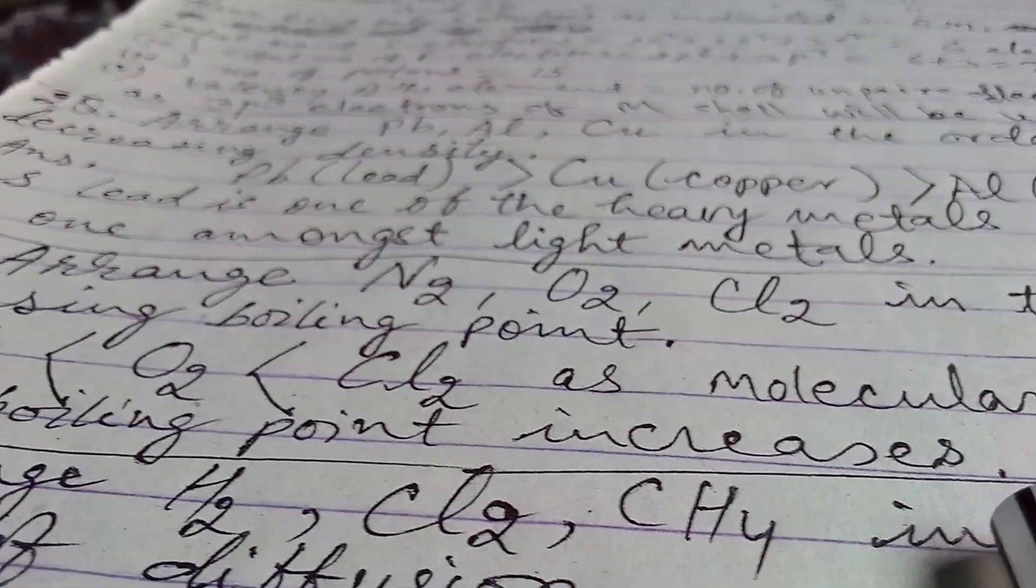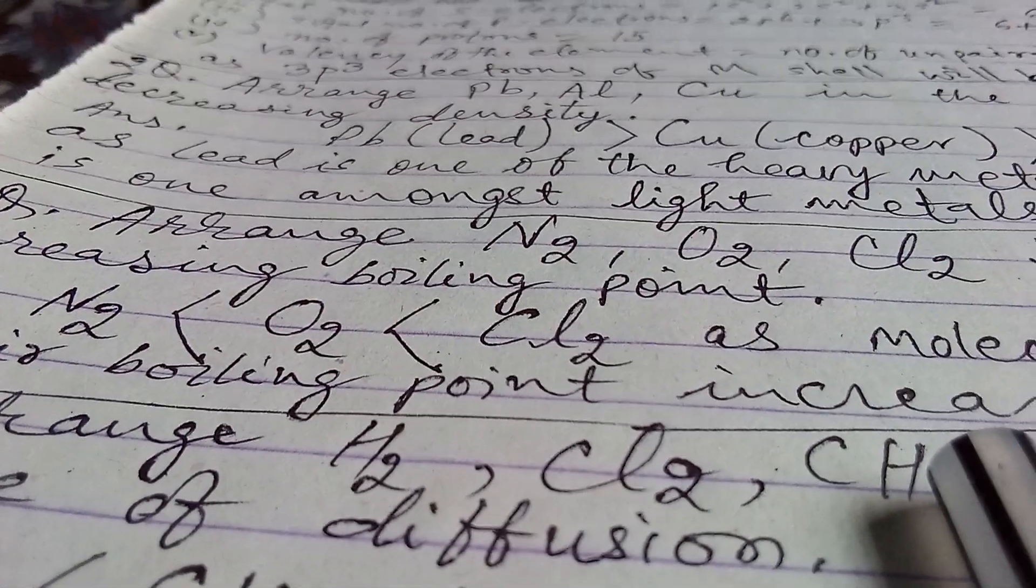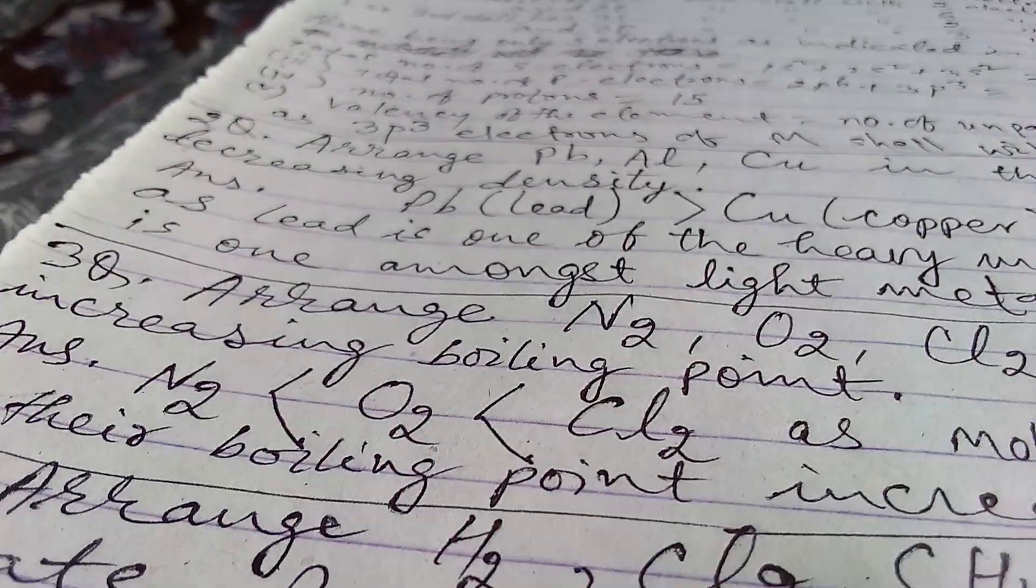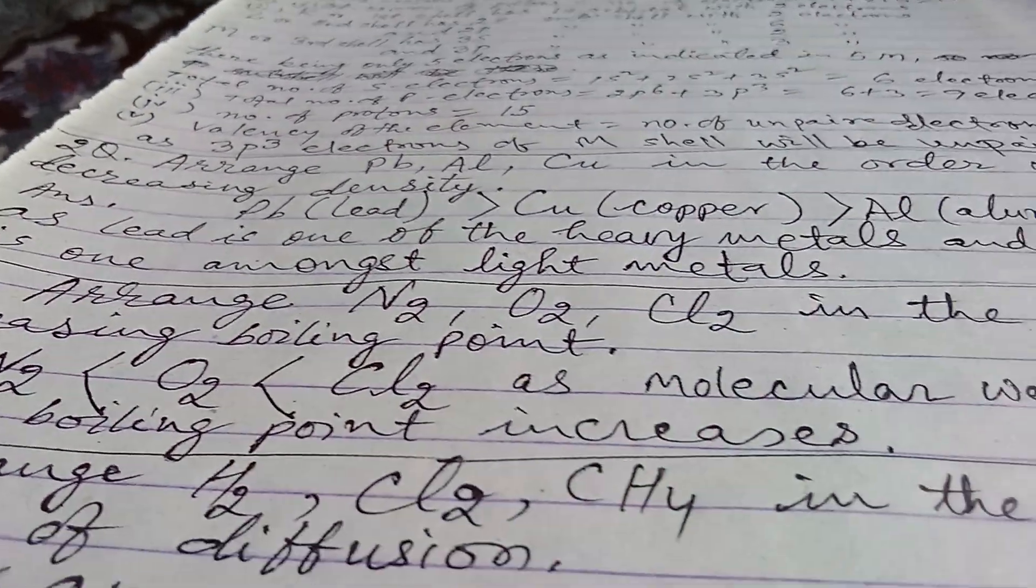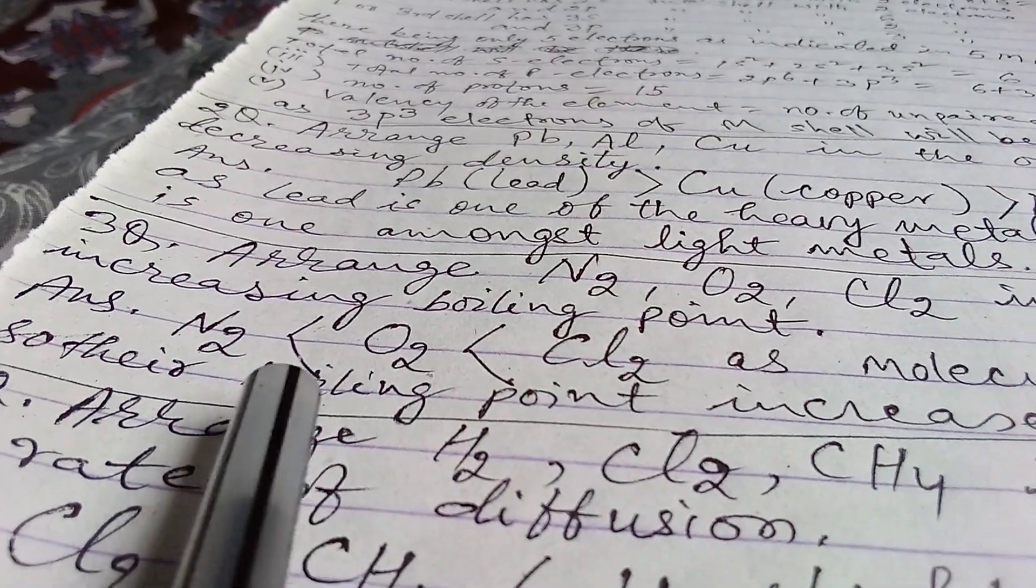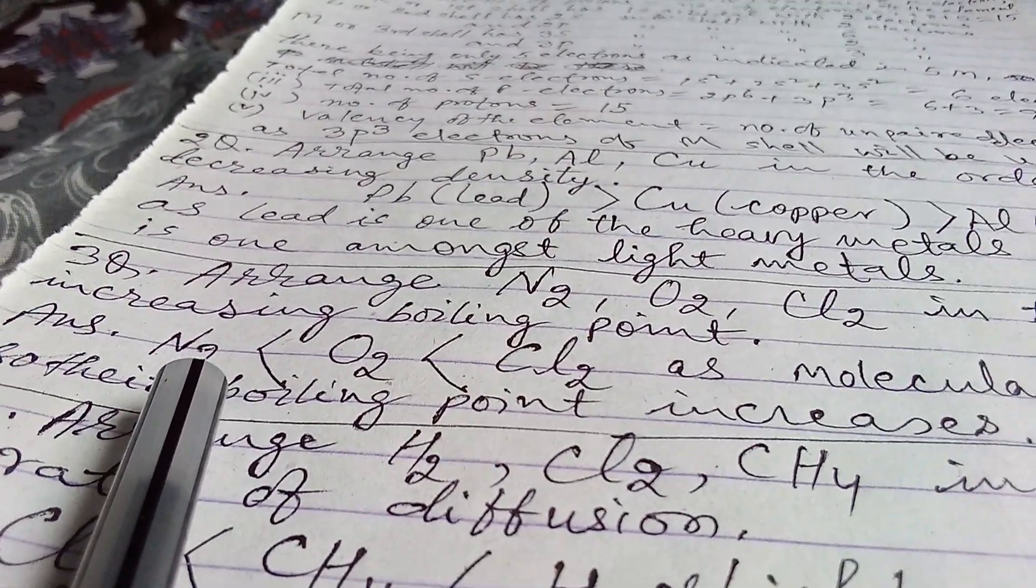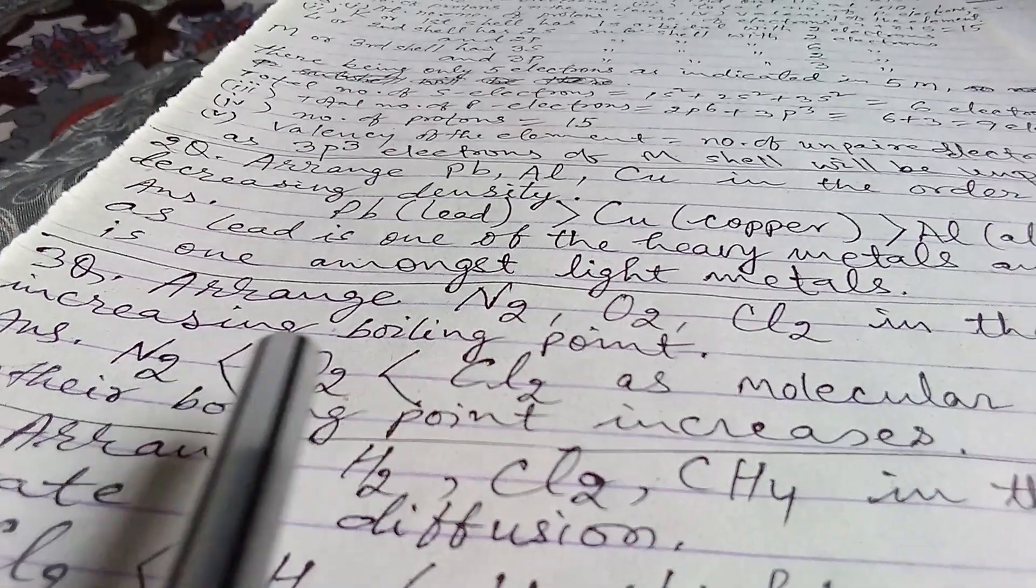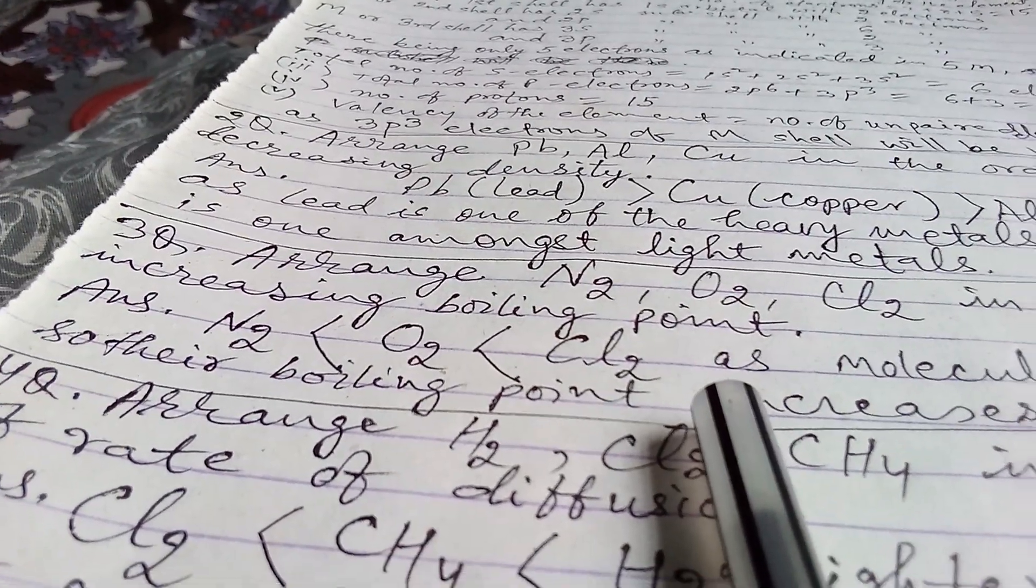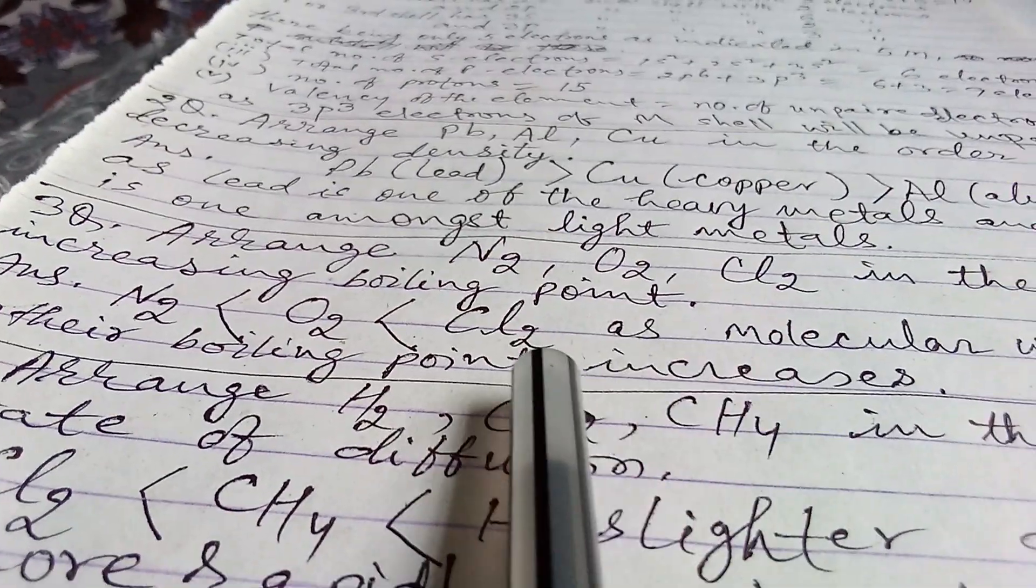That means molecular weight and boiling point both are directly proportional. More the molecular weight, more the boiling point. Less the molecular weight, less the boiling point. So here N2's boiling point is less than that of Cl2, and Cl2 here has the highest boiling point because of highest molecular weight.